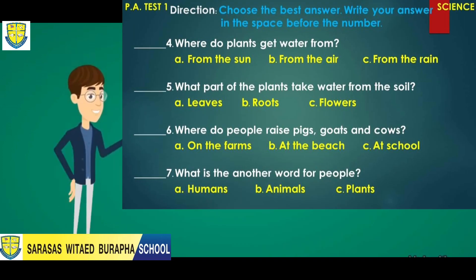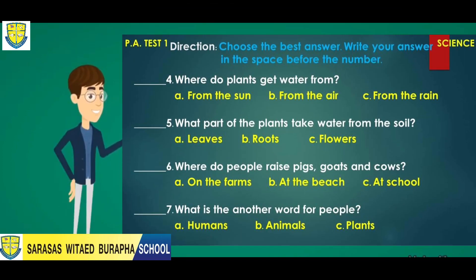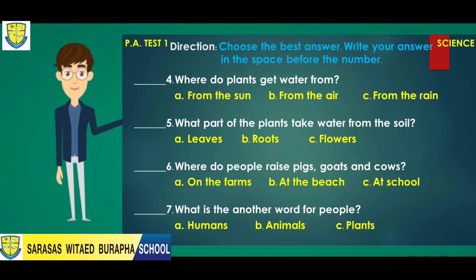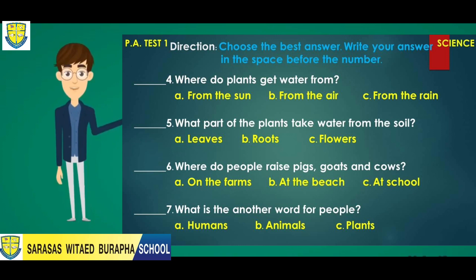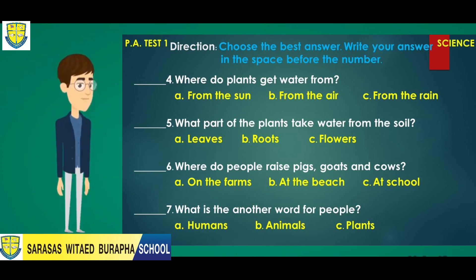Number four: Where do plants get water from? A. From the sun. B. From the air. Or C. From the rain.